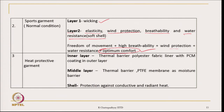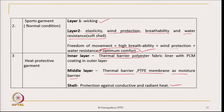Heat protective garments are also made as a layered structure. The inner layer acts as a thermal barrier — it could be a polyester fabric. The middle layer is a thermal barrier again with a PTFE membrane as a moisture barrier. The shell provides protection against conductive and radiative heat. So a layered structure is created where each layer has a distinctive function to play. This kind of layered architecture is used nowadays.